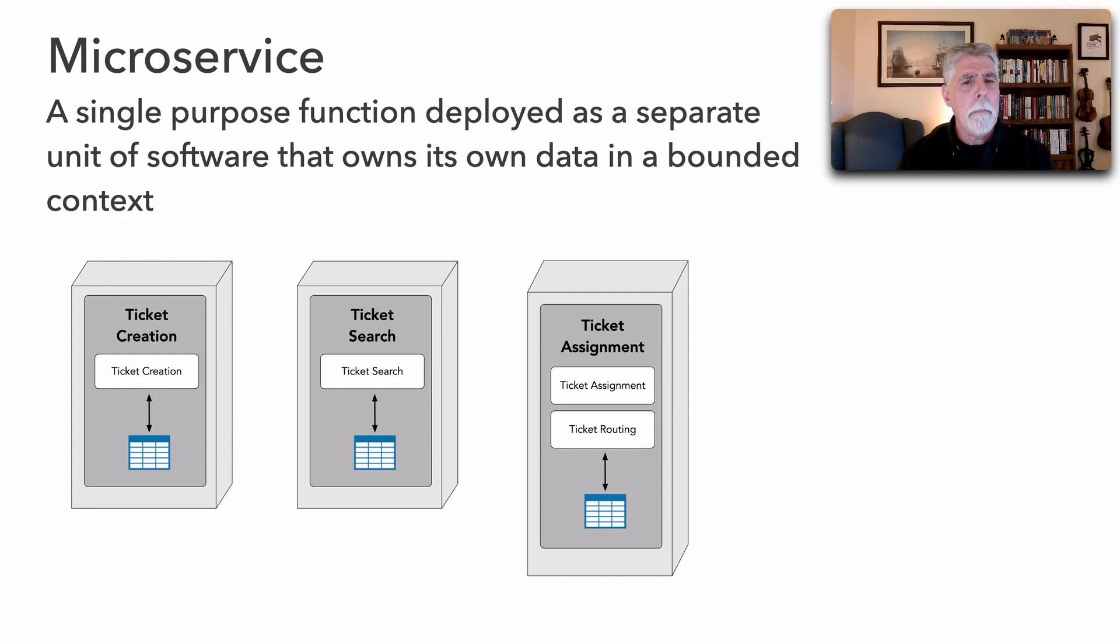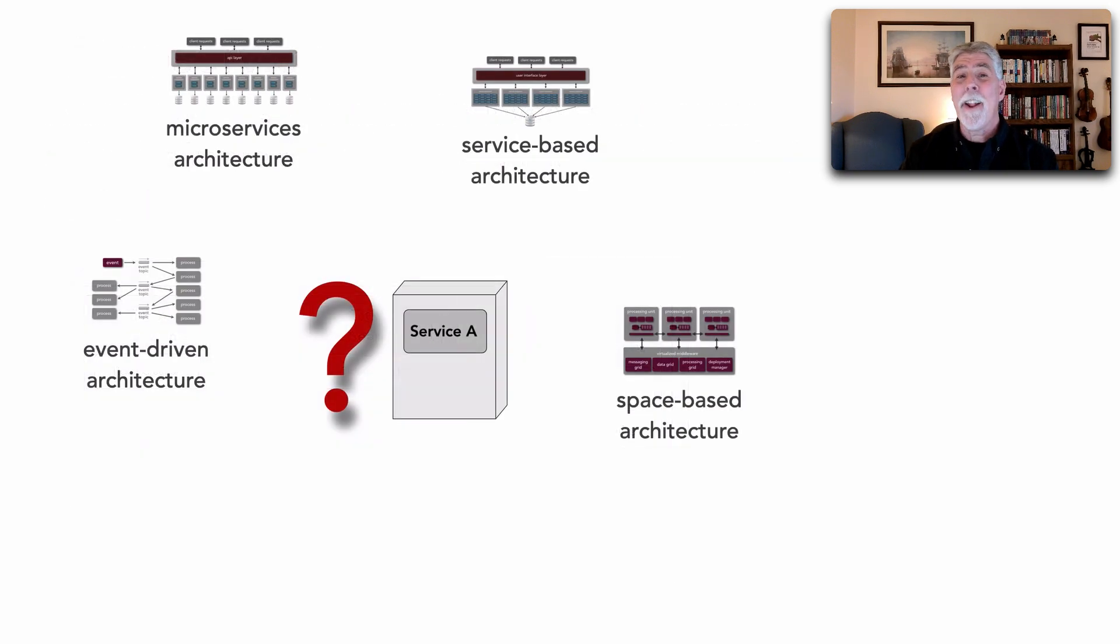We still have the problem with service granularity, but generally the services are fairly fine-grained. I want to get on to a question I'm more excited about: does it matter what kind of service exists in all these different kinds of distributed architectures? As a matter of fact, there is a different name for a service and different characteristics for all of these architecture styles.